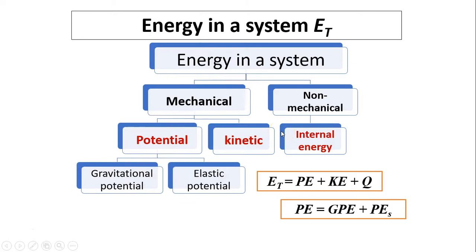Energy in a system. Energy in a system can be mechanical plus non-mechanical. Non-mechanical is internal. Mechanical can be potential and kinetic. Now there are two types of potential: gravitational potential and elastic potential. So the total energy in the system is simply you add everything together. Potential plus kinetic plus internal. Now this potential can be gravitational plus elastic potential.